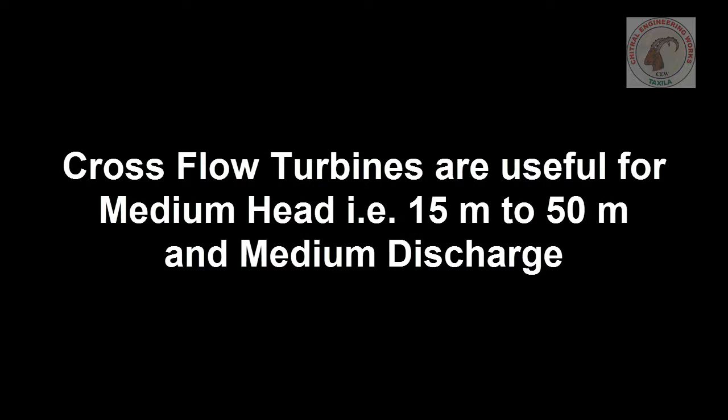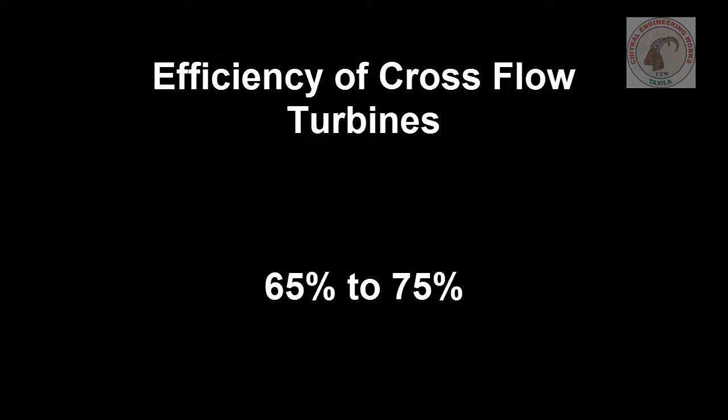These turbines are suitable for medium head and medium discharge of water. The efficiency of cross flow turbines is considered to be 65 to 75 percent.